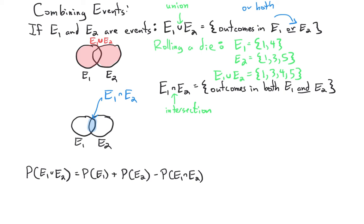The intersection of E1 and E2, written E1 ∩ E2, contains only the outcomes in both events. Using the same events, the only outcome in both E1 = {1, 4} and E2 = {1, 3, 5} is 1, so E1 ∩ E2 = {1}. Union corresponds to the word OR, while intersection corresponds to the word AND.